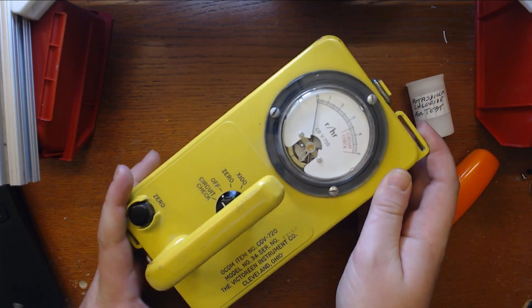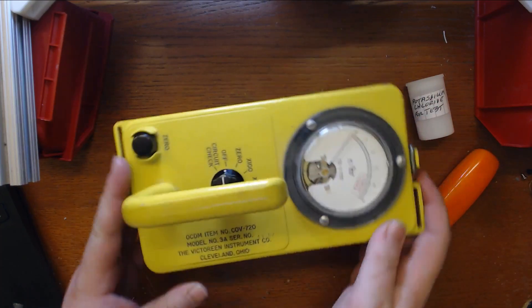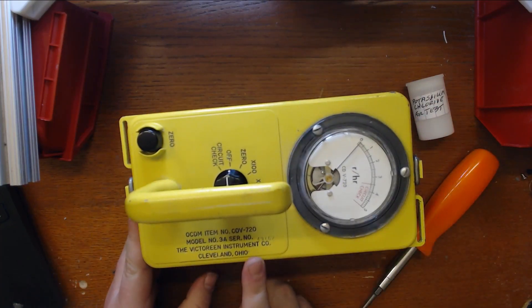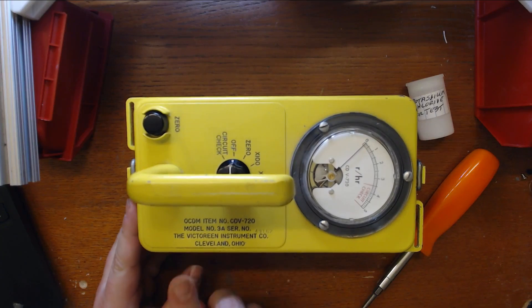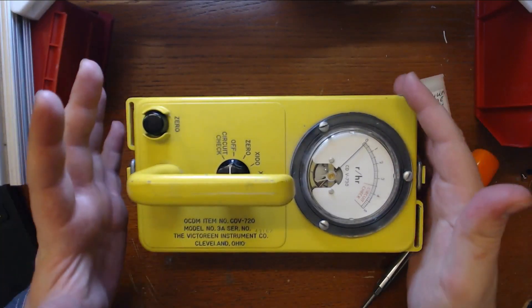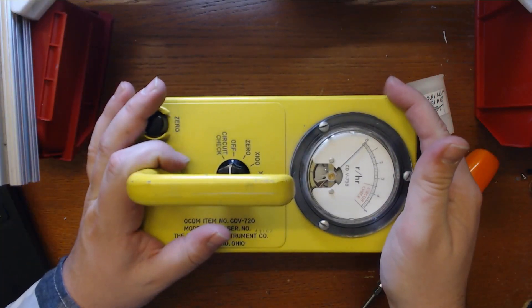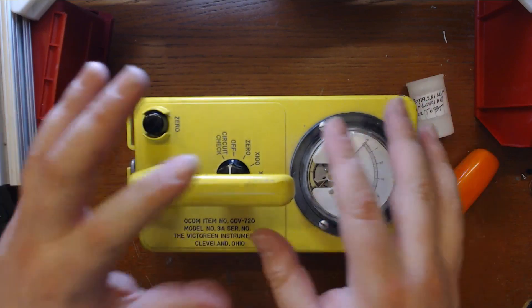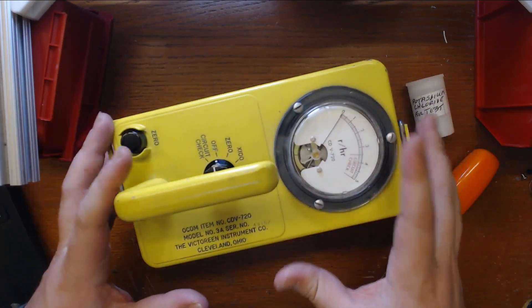This is an honest-to-goodness Cold War Geiger counter. It's made by the Victorine Instrument Company out of Cleveland, Ohio, which is long since defunct, but apparently they made thousands upon thousands of these during the Cold War so that in the event of a nuclear attack, you could use this to evaluate for your family just how dangerous it was outside in a particular spot.